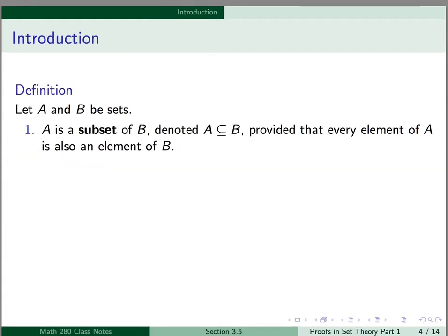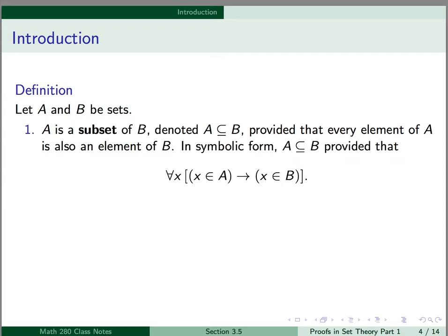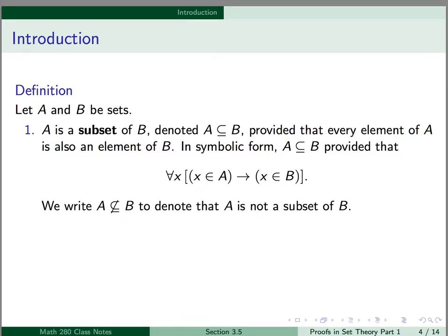A is a subset of B, denoted with our subset symbol, provided that every element of A is also an element of B. In symbolic form, A is a subset of B provided that for all x, x is an element of A implies x is an element of B. We put a slash through the subset symbol to denote that A is not a subset of B.